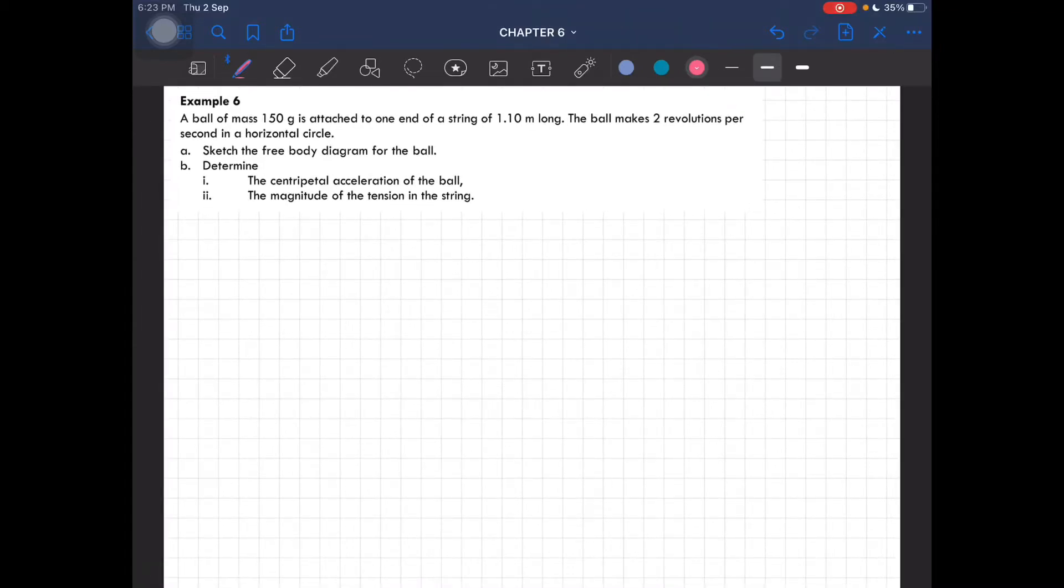Okay, Example 6: A ball of mass 150 grams is attached to one end of a string of 1.1 meters long. The ball makes two revolutions per second in a horizontal circle. So this is a situation in which it is horizontal.